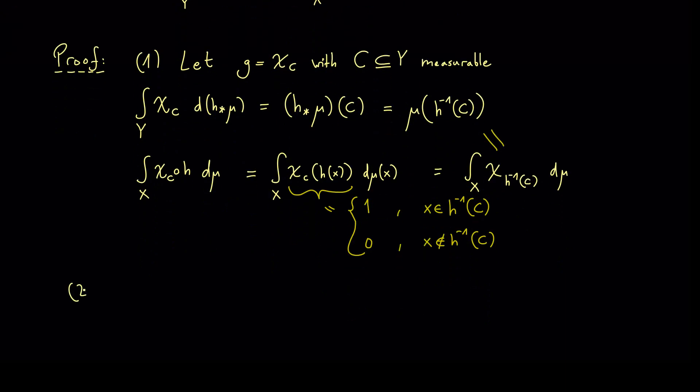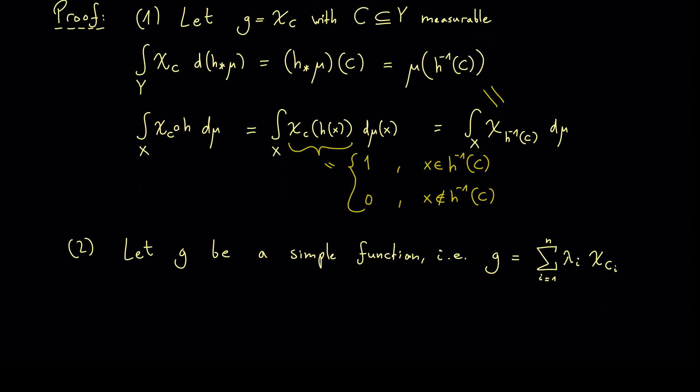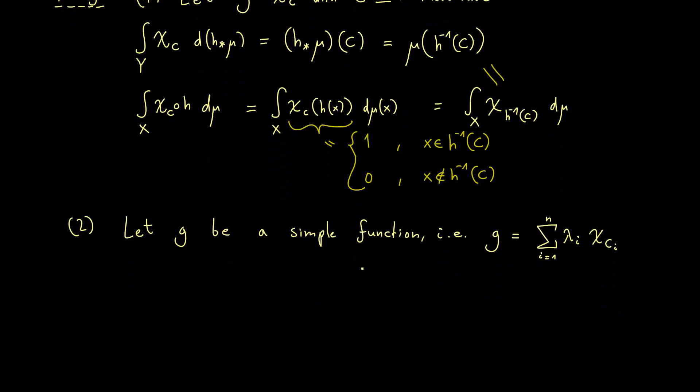And in the second case we go over to simple functions. This means that our function g is now a linear combination of characteristic functions. Hence we can write it as a sum i=1 till n where we have coefficients lambda i and sets ci. Ok so in this case you may immediately see that we can just use the first case and the linearity of the integral. However for the sake of completeness let's write that down.